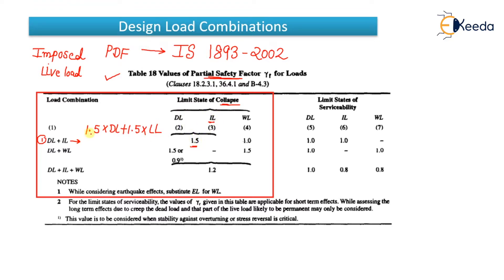So you multiply dead load by 1.5 and live load by 1.5. If you take 1.5 as common, what remains is dead load plus live load. That is your first combination: 1.5 × (dead load + live load). This is the first combination you have to use for the design of a structure.